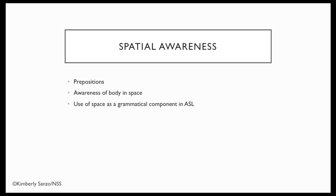The use of space is grammatical in American Sign Language. This means that the way you use the space around you holds important meaning, such as verb tense. It's also used to set up a scene and tell a story, and it's used for pronouns. We use space to hold the place of a person so you can continually refer back to that person as you continue talking or telling a story. So when a child who is deaf or hard of hearing has difficulty organizing and understanding space, this can greatly affect their grammar in American Sign Language.